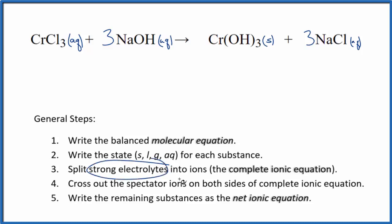Now we can split the strong electrolytes into ions for the complete ionic equation. For chromium, we can't tell its charge because it's a transition metal. But we do know that chlorine, the chloride ion, is one minus. Since we have three of them, this has to be three plus. So we'll have the chromium three ion plus three chloride ions.